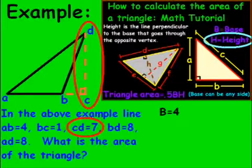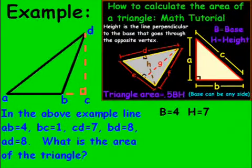We're looking for the height, and that's the line that goes perpendicular through the opposite vertex. And so, basically, it goes through our base on a 90-degree angle. And so, our base is going to be AB, and our height is going to be CD. Now, CD is 7. I'm going to write that down there. So base equals 4, H height equals 7.